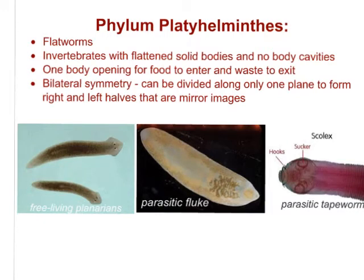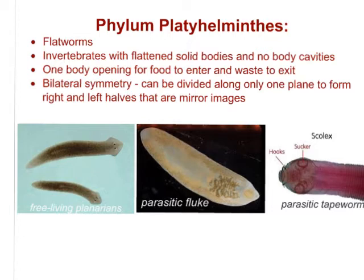The next phylum is Platyhelminthes — a big word — which refers to all flatworms of the world. They are invertebrates with flattened solid bodies and no body cavities. There is only one body opening for food to enter and for waste to exit. They do have bilateral symmetry — they can be divided along only one plane to form right and left halves that are mirror images of each other. Examples include parasitic organisms such as a fluke and a tapeworm, and free-living planarians.